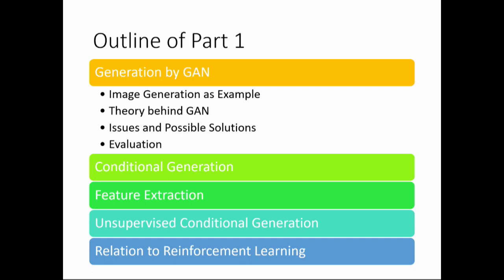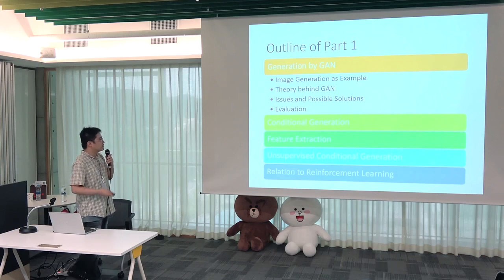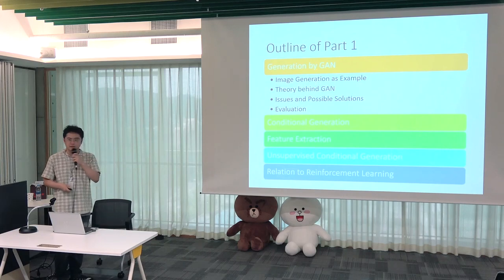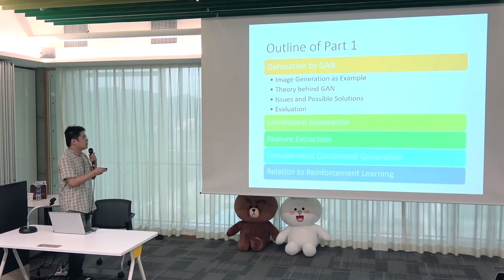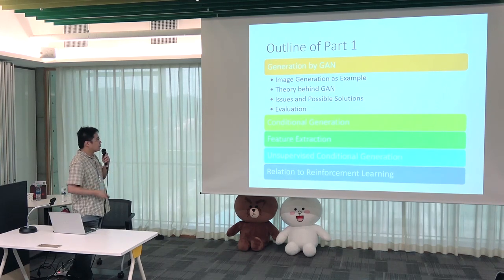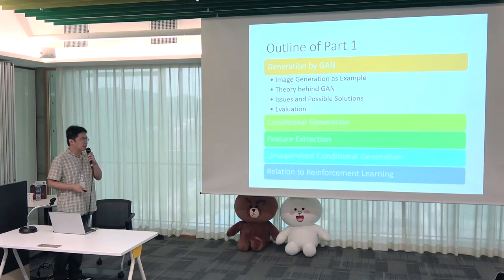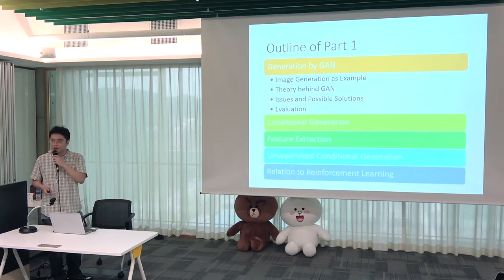In part one, I'm going to first give a general introduction of GAN, then talk about conditional generation, feature extraction, and unsupervised conditional generation. Finally, I will connect GAN with reinforcement learning. For the general introduction of GAN, I will first use image generation as an example, then introduce the theory behind GAN, show some issues and possible solutions, and talk about evaluation of results.